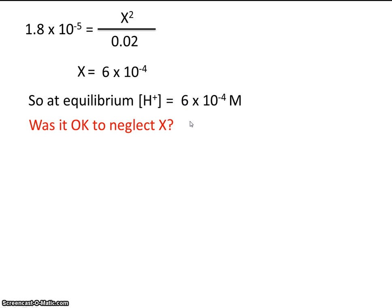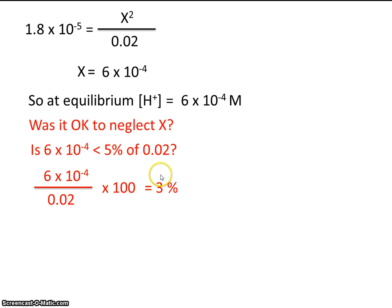So was it okay to neglect x? Well, let's check. Is this value less than 5% of 0.02? So remember, this is the x that we just solved for. And is it less than 5% of our initial concentration of reactant? Let's do the math. Well, it turns out it's 3%, and 3% is less than 5%. So it was okay to neglect x. So we don't have to use the quadratic formula.